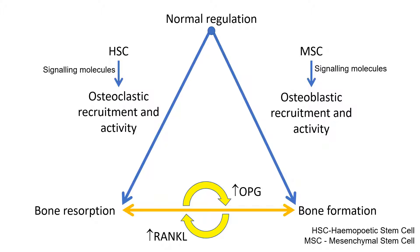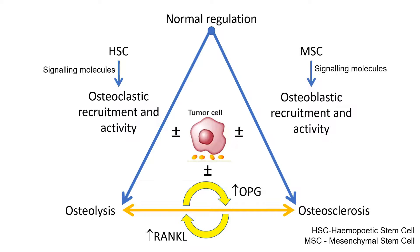To simplify further: mesenchymal stem cells through signaling molecules lead to osteoblastic recruitment and activity, responsible for bone formation. Hematopoietic stem cells through signaling molecules result in osteoclastic recruitment and activity, responsible for bone resorption. Osteoclasts and osteoblasts interact — increased OPG leads to bone formation, increased RANK ligand leads to bone resorption. It is this mechanism that is hijacked by tumors leading to osteolytic and osteosclerotic metastasis.